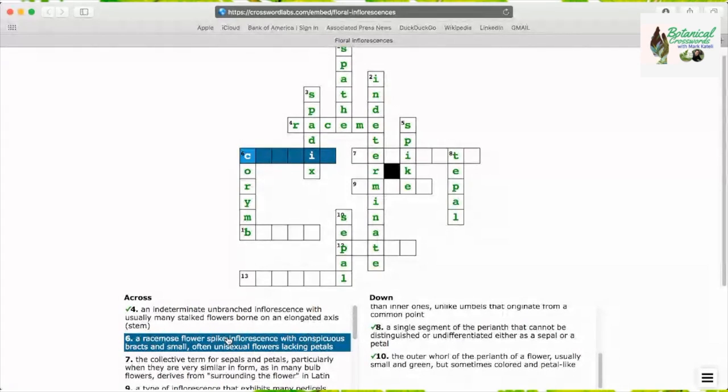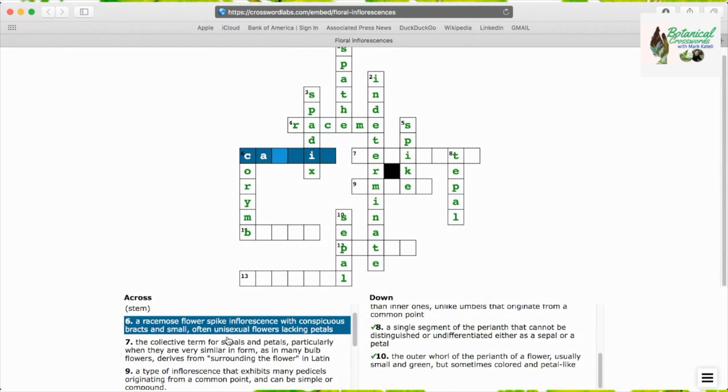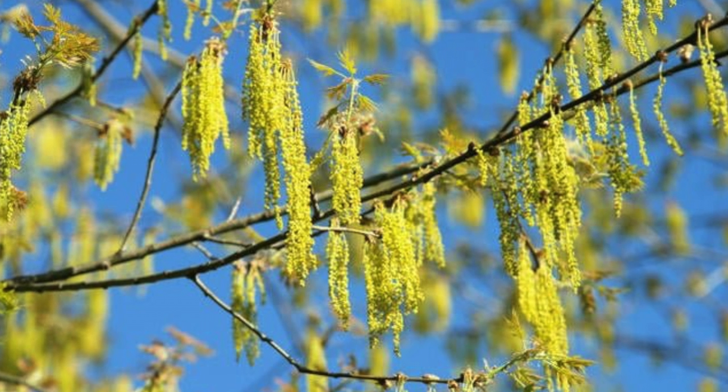Catkin, a racemose flower spike with conspicuous bracts and small, often unisexual flowers lacking petals, as in this picture of an oak.